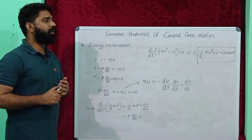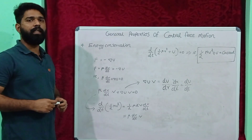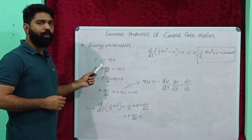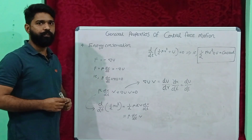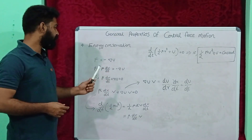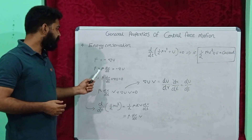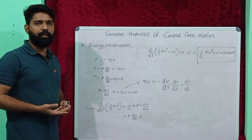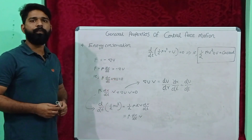The fourth general property of central force motion is energy conservation. We know the equation of force F equal to minus delta U. We can rewrite this equation as F equal to MA, and here we write it as mu dv by dt, where mu means reduced mass and dv by dt is acceleration. So mu dv by dt is equal to force, and that force is equal to minus delta U.